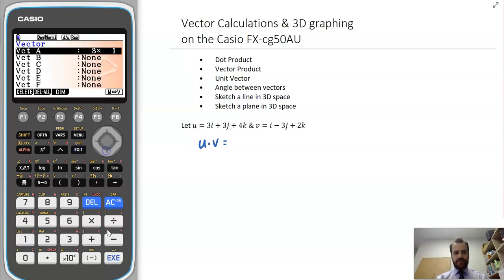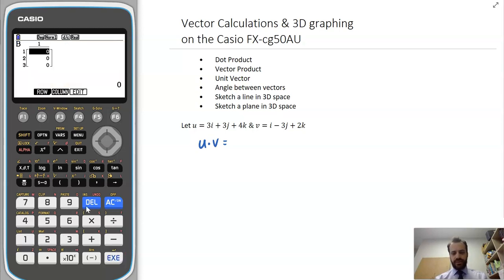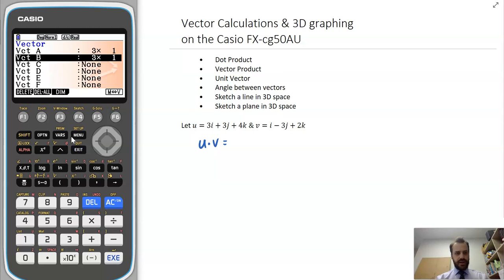And then do the same here for vector B. A three-by-one, and it's 1, negative 3, and 2. And get out of there.